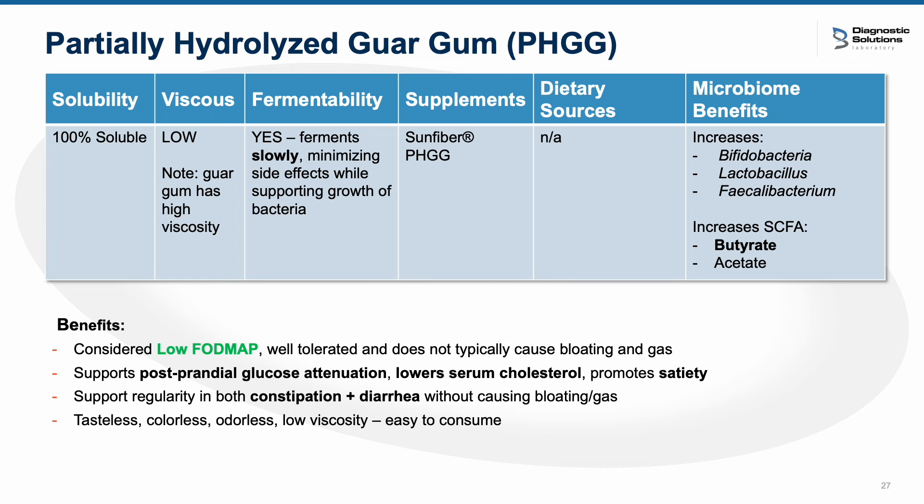Partially hydrolyzed guar gum, or PHGG, is a soluble, non-viscous fiber. It is fermentable but ferments slowly, minimizing side effects while supporting bacterial growth. In supplements it's listed as PHGG or as Sun Fiber, a patented form. Prebiotic benefits include increasing Bifidobacterium, Lactobacillus, Faecalibacterium, and increasing SCFAs such as butyrate. It is considered a low FODMAP fiber, making it suitable for fiber-intolerant or FODMAP-sensitive patients. It can help with postprandial glucose, lowers serum cholesterol, and improves satiety. A nice property is that it can help with both constipation and diarrhea without causing bloating and gas.